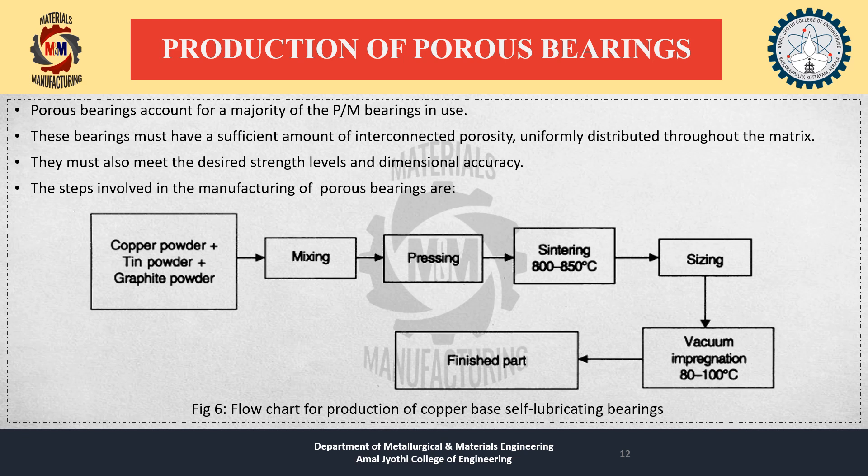Mixing is done prior to compaction. The mixed powders are then compacted to the required dimension using an automated compaction process. This is followed by sintering, which is done at 800 to 850 degrees Celsius. The next step is sizing, where the self-lubricating bearings are sized after sintering to control dimensions.